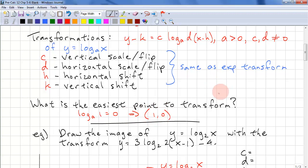Since we have the same transform as before, our original x and y gets transformed into x over d plus h, and c times y plus k. So if you're going to use a table of values, you use this to do your transformation.